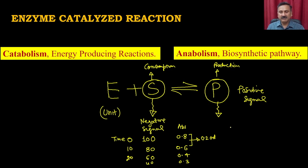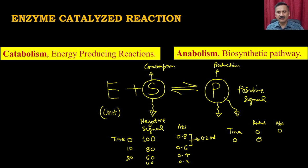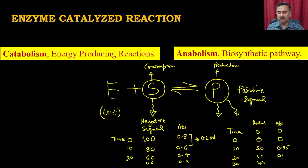Similarly, when talking about a positive signal — at time zero there are no product molecules and absorbance is zero, because the enzyme has just started the reaction. After 10 minutes, 20 molecules are produced, showing an OD of about 0.35. After 20 minutes, 30 molecules show about 0.5, and 40 molecules show about 0.7.